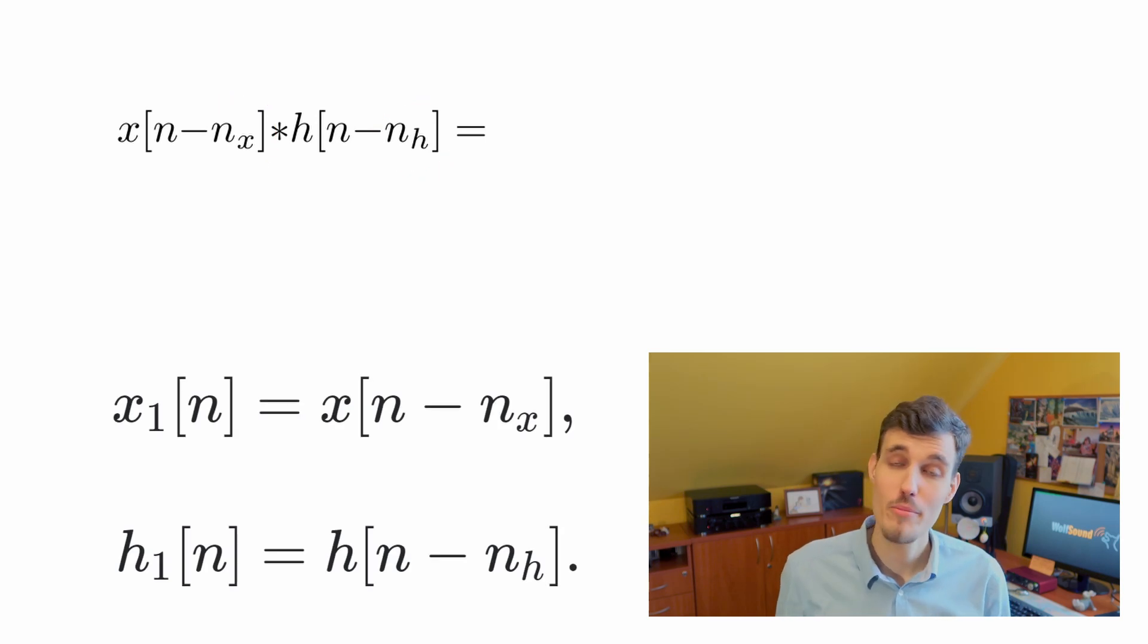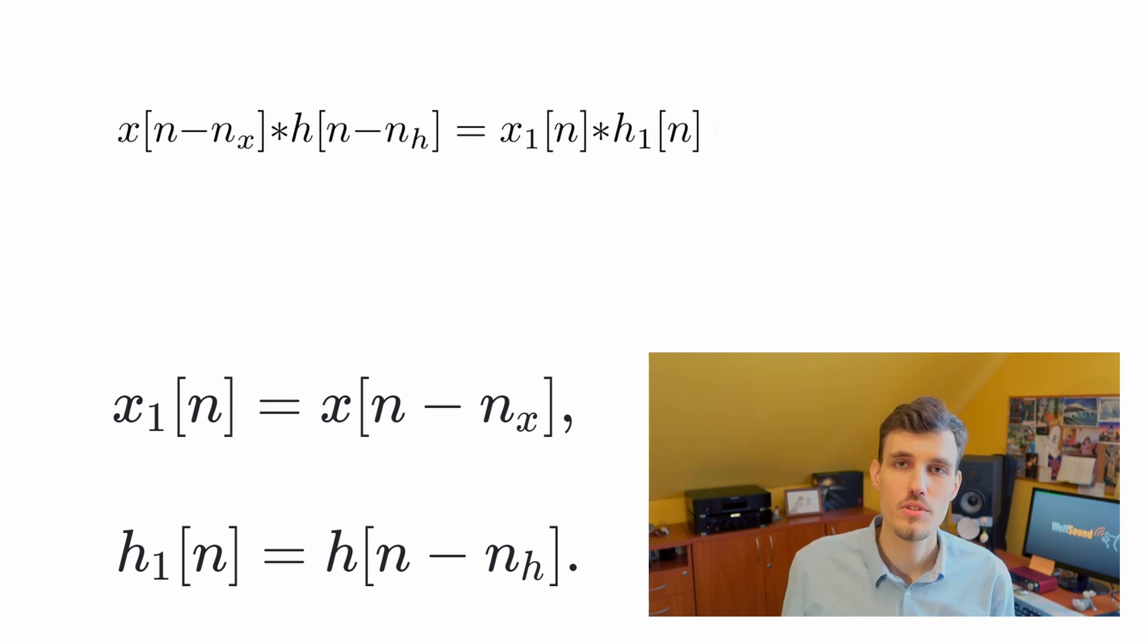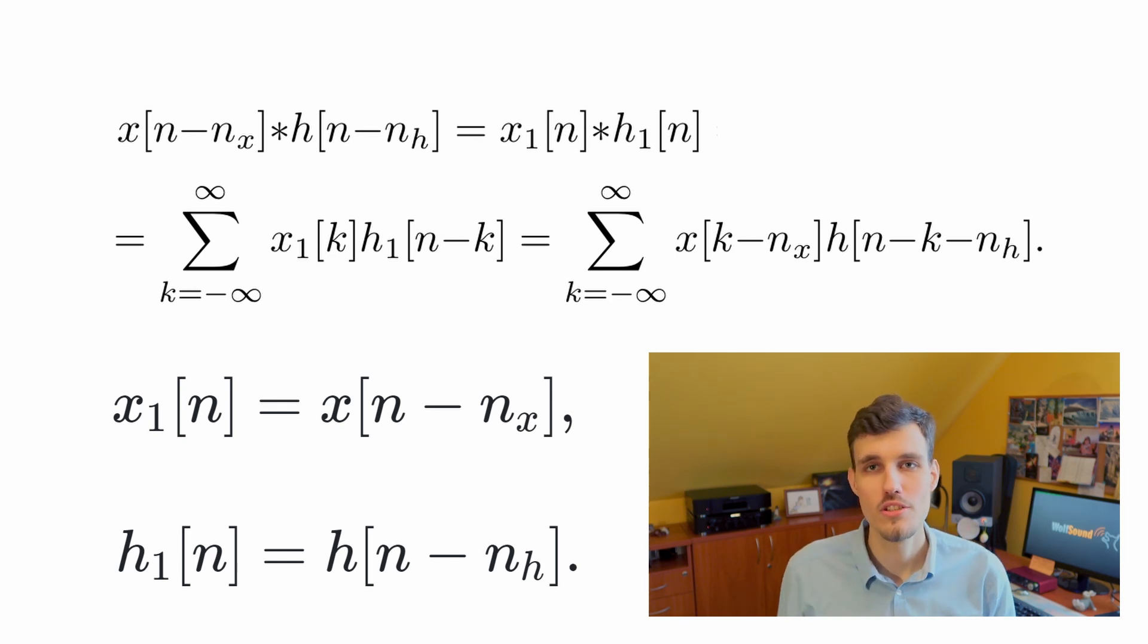We now define a helper function x_1[n] which is the delayed version of x. We do the same for h. Now we can substitute them in the star notation of convolution.